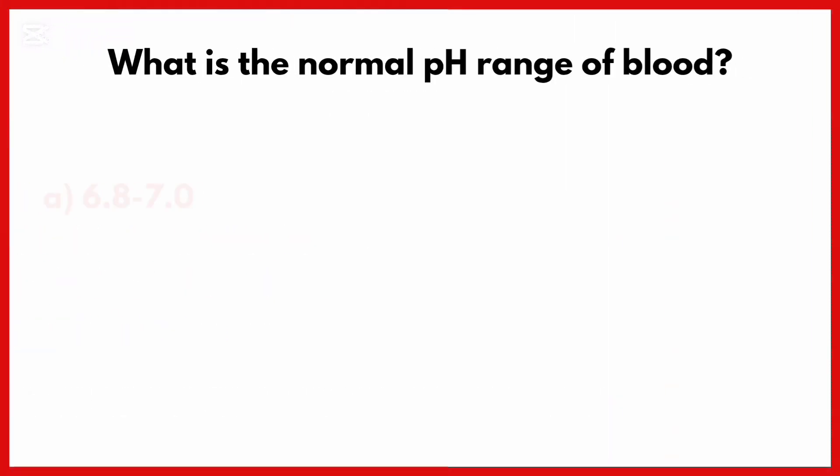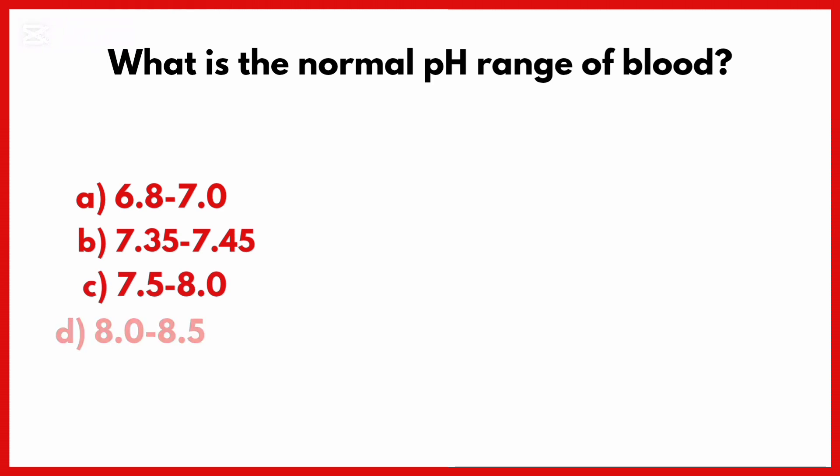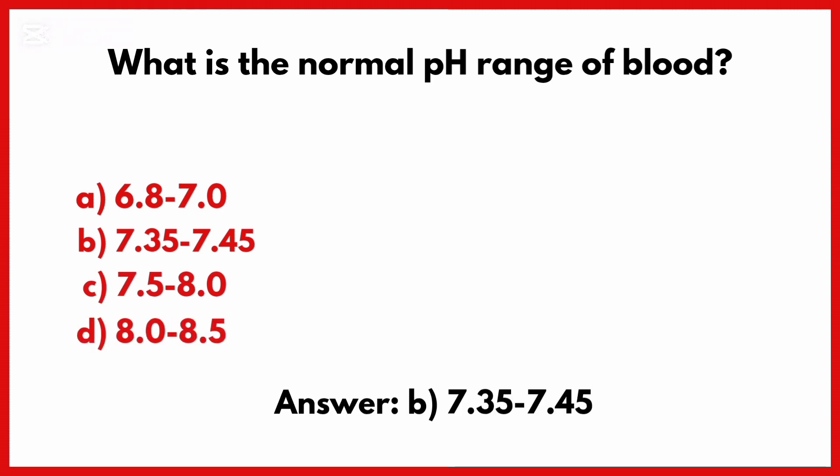What is the normal pH range of blood? Correct answer is option B: 7.35 to 7.45.